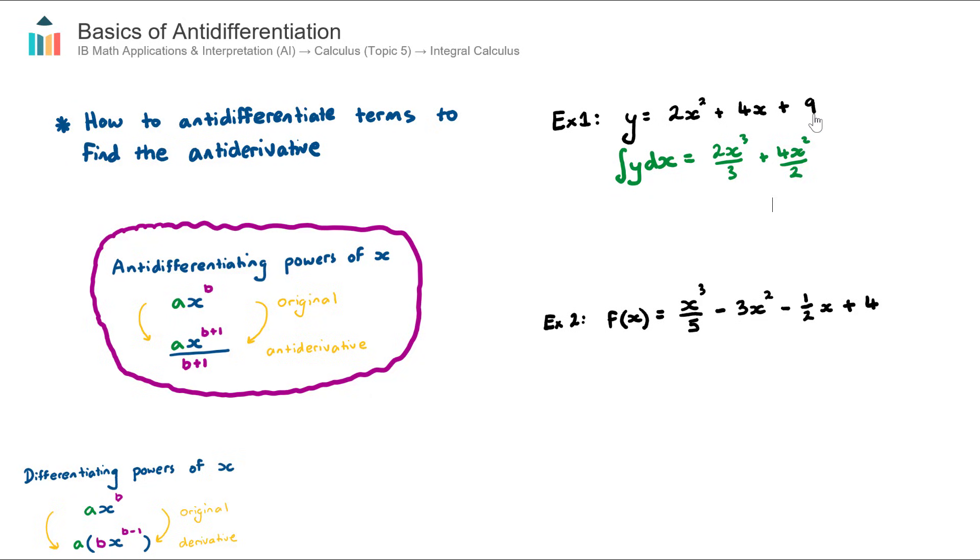Third term, 9. This is an interesting one here. I like to think of this as 9x^0, because x to the power of zero is equal to one. So this is actually nine times one, which is just nine. But if I think about it this way, I can just do this antidifferentiation step. So I add one to the power, and I divide by that new power. So plus 9x^1, and divide by that new power.